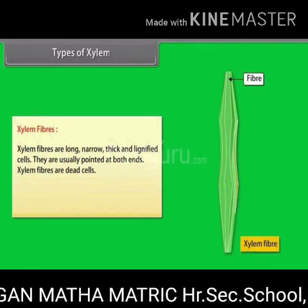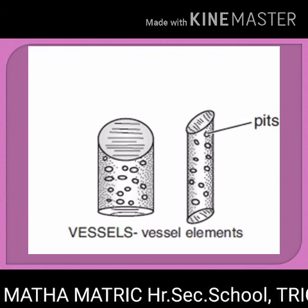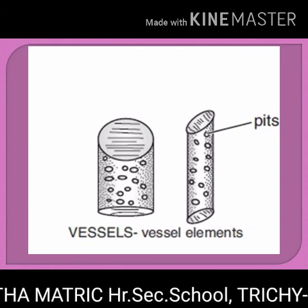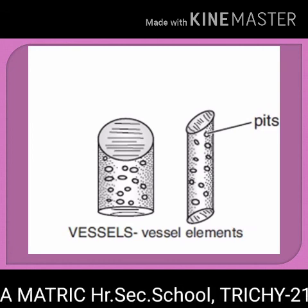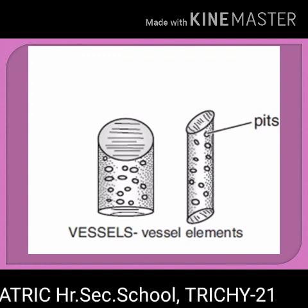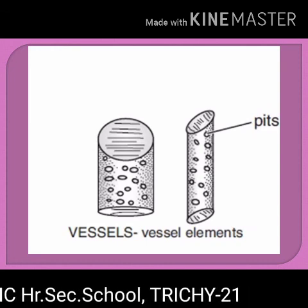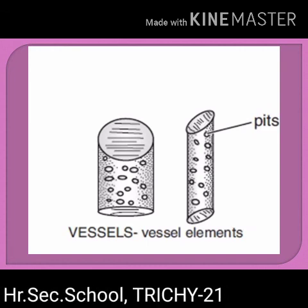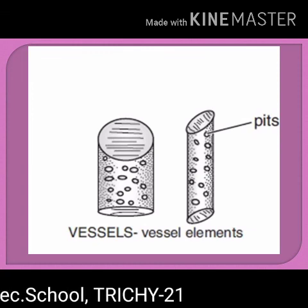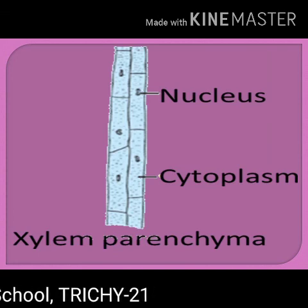Xylem vessels are long, cylindrical, tube-like structures with lignified walls and a wide central lumen. These cells are dead, as they do not have protoplasts. They are arranged in longitudinal series in which the partition walls are perforated — perforated means having small holes — and so the entire structure looks like a water pipe. Their main function is transport of water and providing mechanical strength.